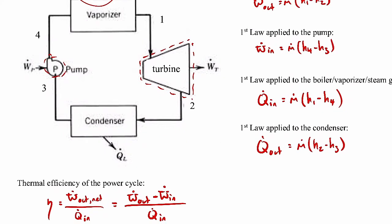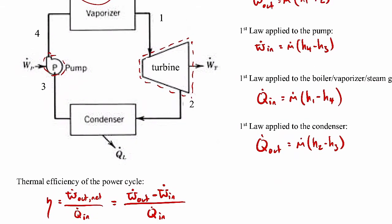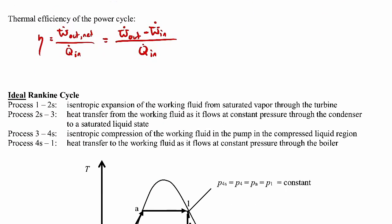What is a little bit new is we've talked about isentropic efficiencies for the turbine and the pump. A lot of times we'll consider the Rankine cycle with turbines and pumps that have a certain isentropic efficiency. We might ask what power we'd get if operating with 100% isentropic efficiency — no irreversibilities in the pump or turbine. That's what we call an ideal Rankine cycle.